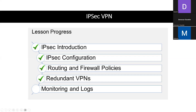Let's do a quick knowledge check. Question one: Which feature should be enabled in a redundant IPsec VPN deployment? Is it A, DPD, or B, Xauth? The answer is A — DPD.